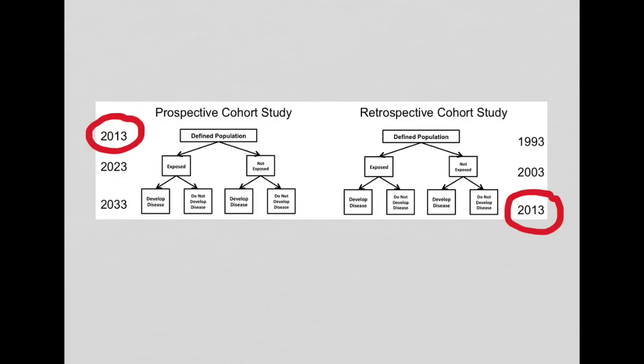In the retrospective study, here is the researcher in time. So let's just say it's you in 2013, and you go into the population. Say you were going to look at patients who came to Rush Medical Center. And you're going to look at all the patients who were at Rush in 1993. And then you're going to follow those patients, go back to their medical record in 2003, and see whether they were exposed.